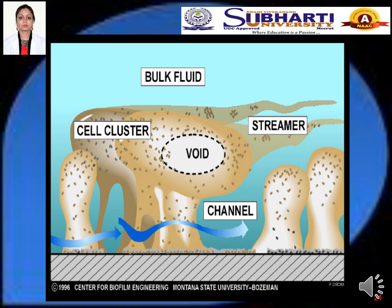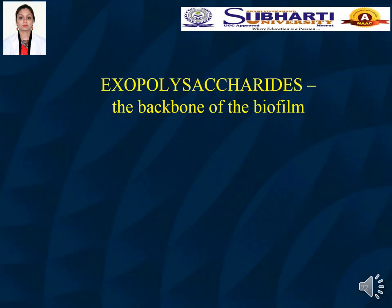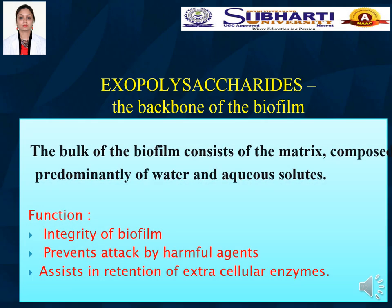One of the most important features of biofilm is that it consists of highly permeable fluid channels, which act as a means of exchange of nutrients and metabolic products, forming a primitive circulatory system. Exopolysaccharide forms the backbone of the biofilm and gives it important properties: it helps maintain the integrity of the biofilm, prevents attack by harmful agents such as antimicrobials or antibiotics, and assists in the retention of extracellular enzymes. Because of this exopolysaccharide coating, bacteria inside biofilms are resistant to attack by antibiotics and antimicrobial agents.